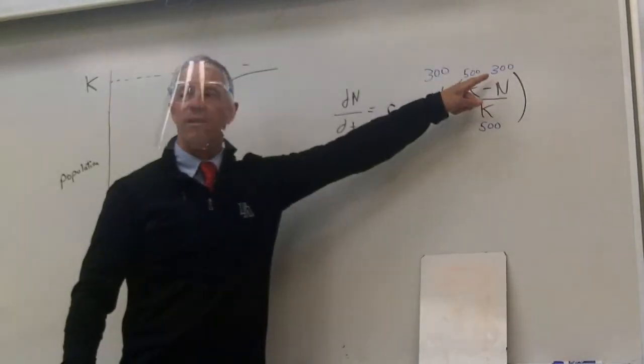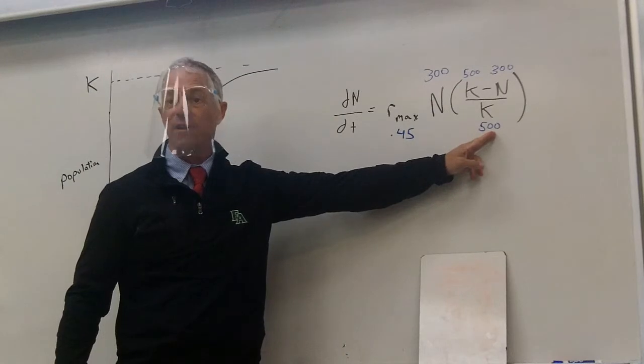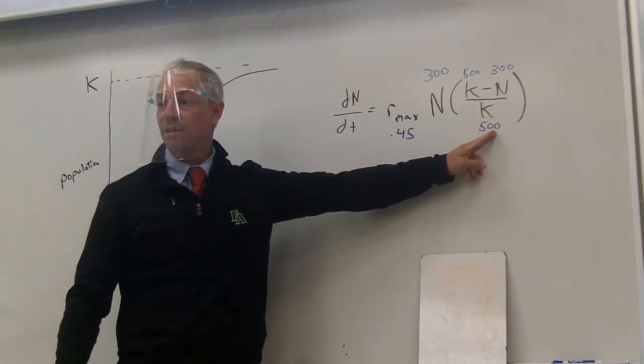What's 500 minus 300? 200. 200. What's 200 over 500? Two-fifths. Two-fifths, which is what in decimal place? 0.4.